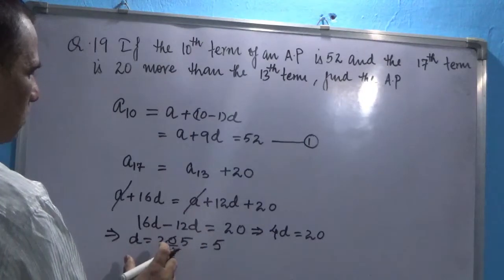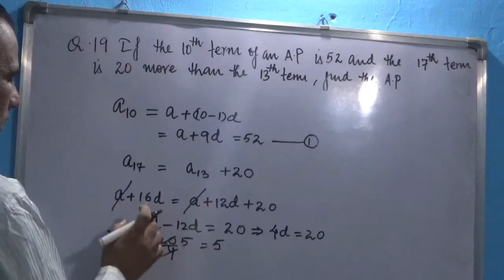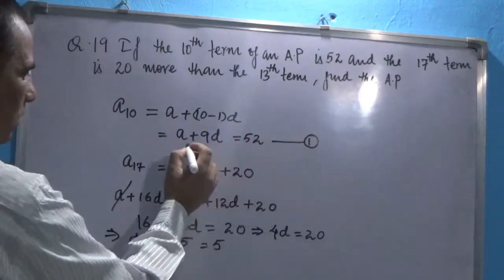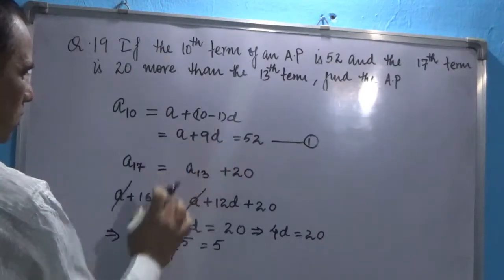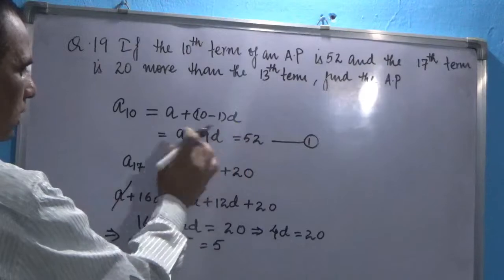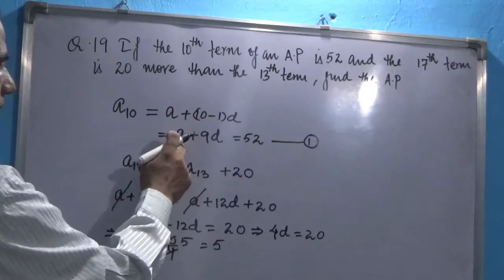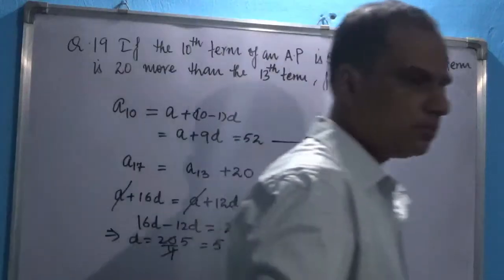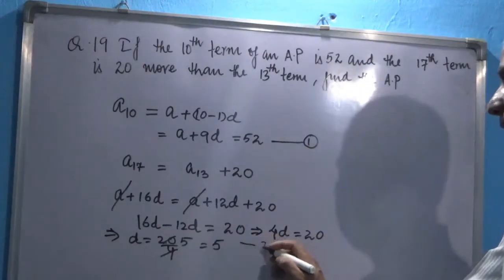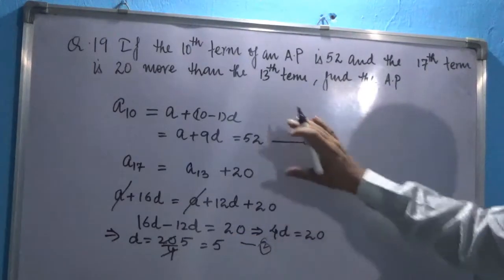Now we have to find out A. For that, we will use this value and put it here in equation 1, because here we have two variables, out of which one variable's value has already been found, and we just have to find the second variable, which is A. So let's put this value of D from equation 2 into equation 1.